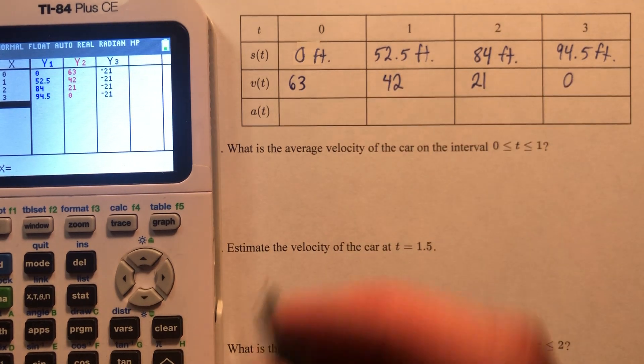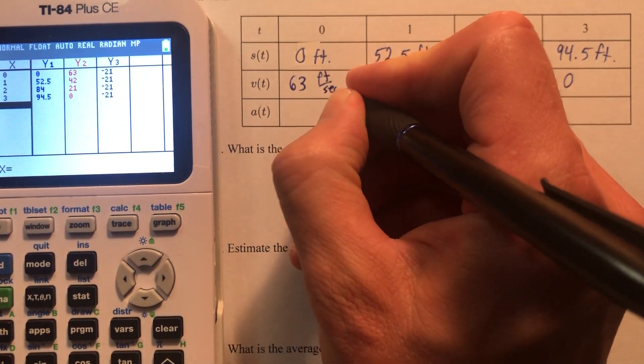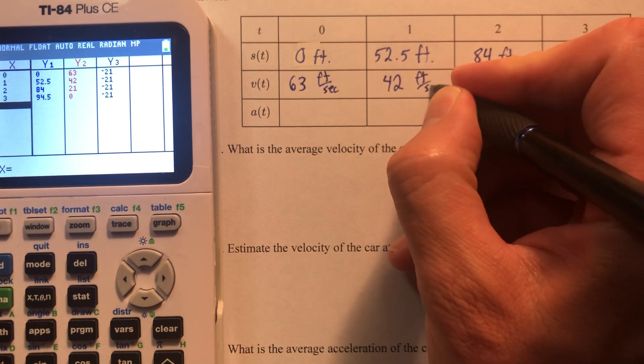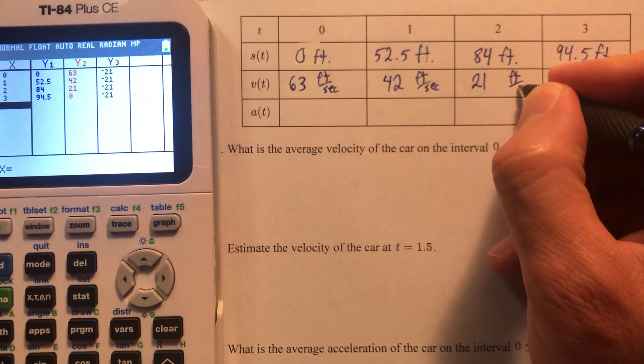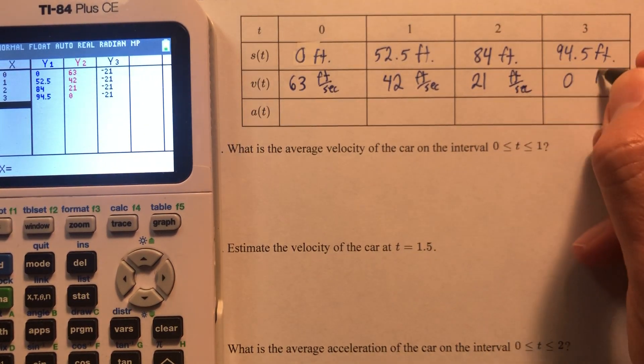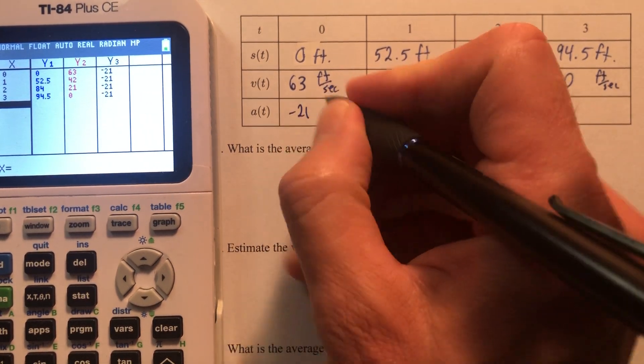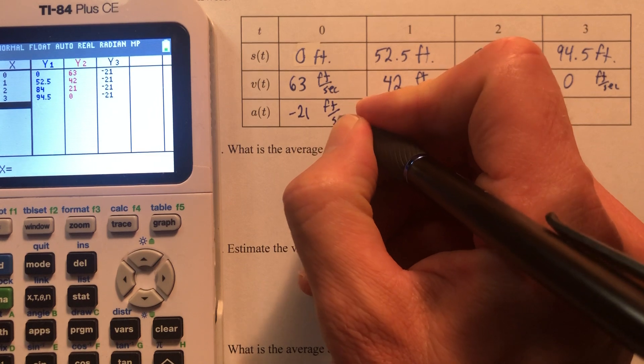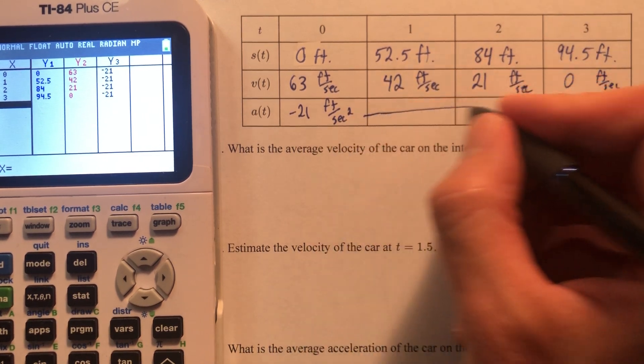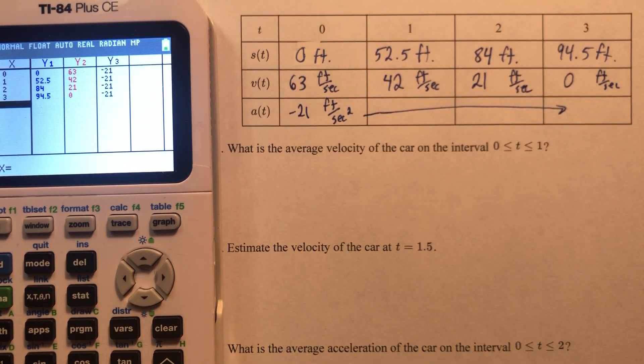And we're going to put units in this, and this is going to be feet per second, feet per second, feet per second, and feet per second. And then acceleration is negative 21 feet per second squared. Let's just save ourselves the trouble. That goes all the way across.